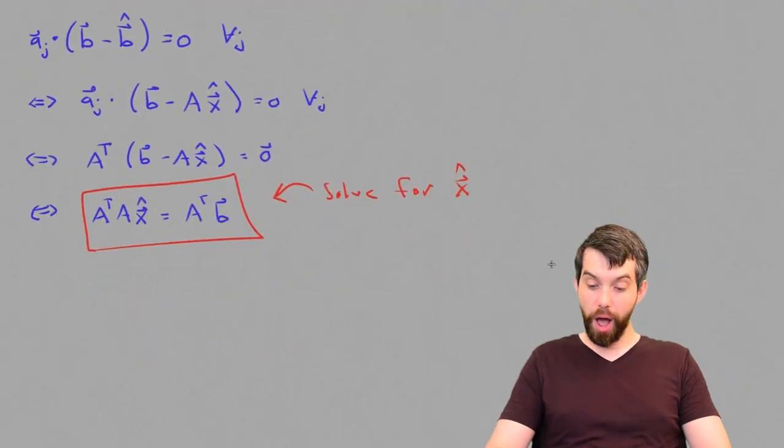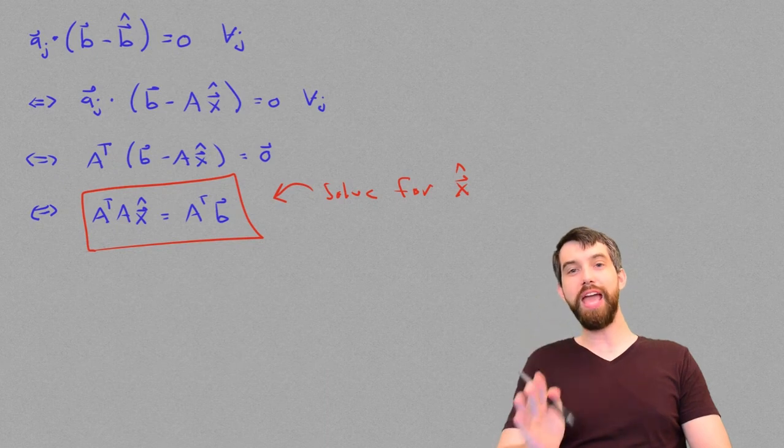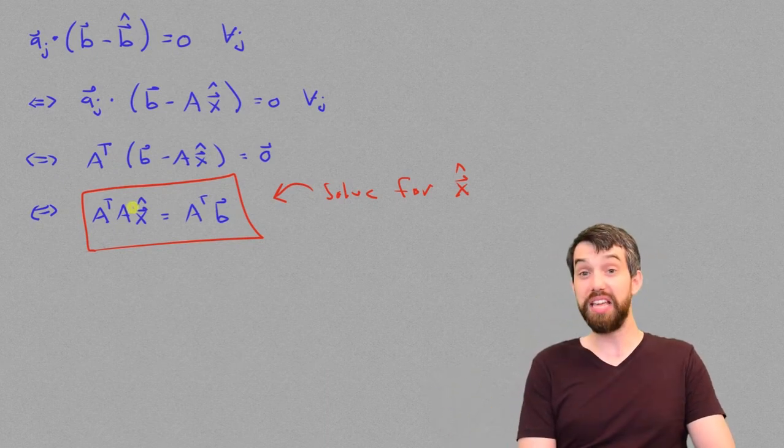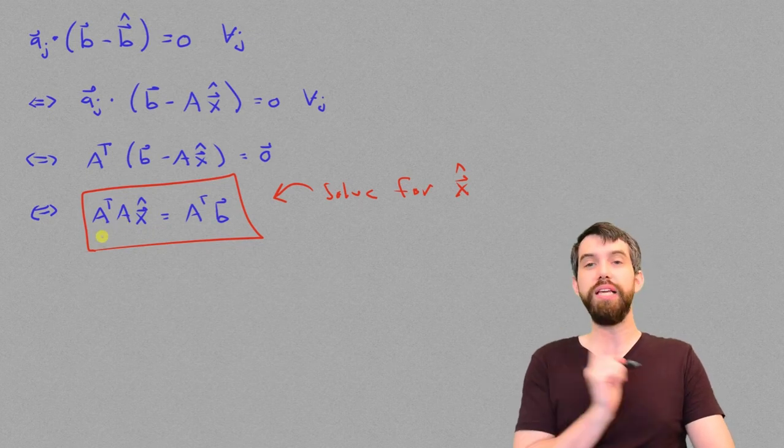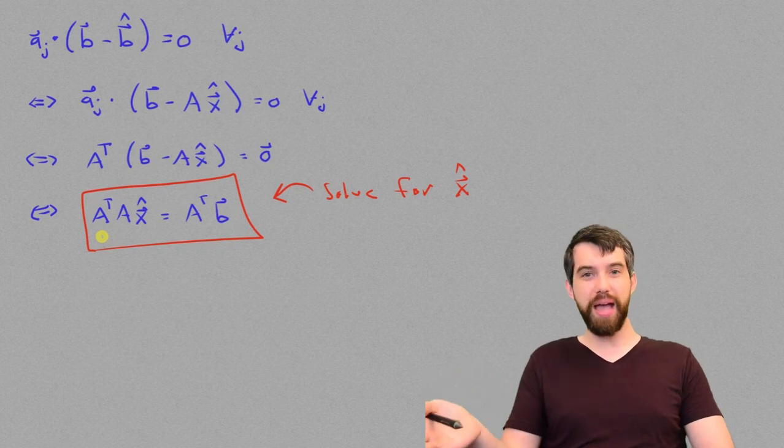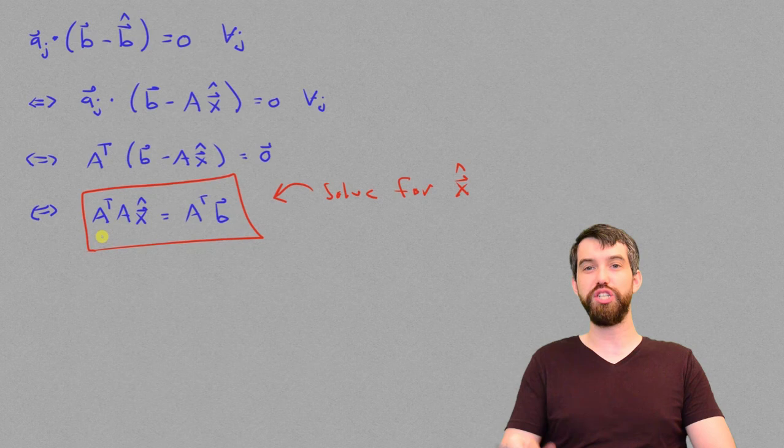Finally, I want to note one theoretical point: if the columns of A are linearly independent, it turns out that A^T times A is an invertible matrix, and there's a unique solution. So we really like it when the columns of A are linearly independent, because then we don't get multiple least squares approximations—we get one least squares approximation.